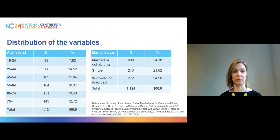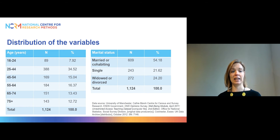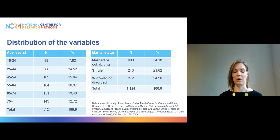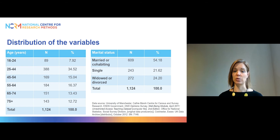The 25 to 44 group is the largest because it's a very wide age range and it's the age range we would normally expect to be working, whereas the younger ones might still be in education and those in the 65 plus groups might be retired. We also have information about marital status: more than half of the participants were either married or cohabiting with a partner, about 20% were single, and around 25% were widowed or divorced.